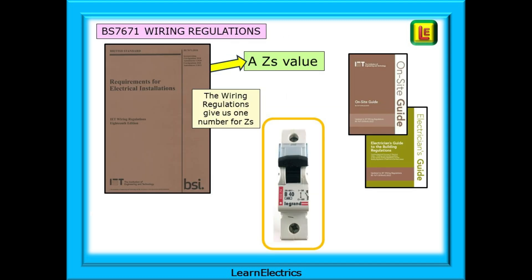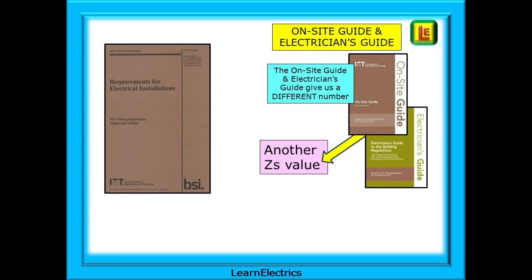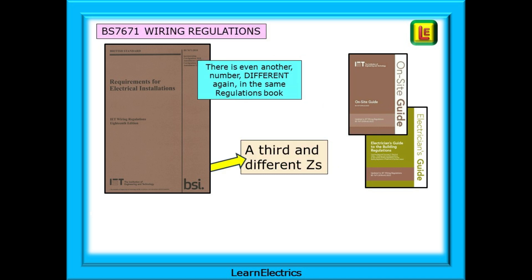If we look in the wiring regulations book, the Big Brown book, we will find ZS values for the different breakers and fuses. And another totally different value in the on-site guide and the electrician's guide to the building regulations. But wait, there's a third value, different again in the same wiring regs book.